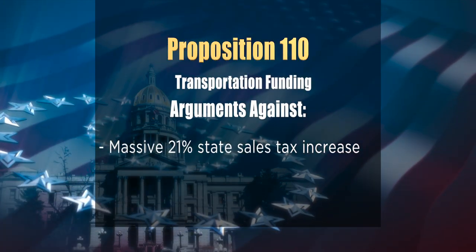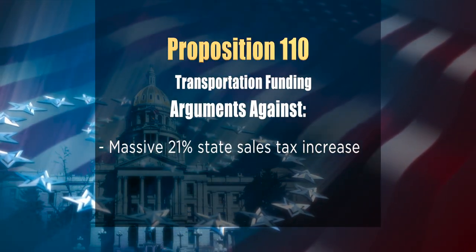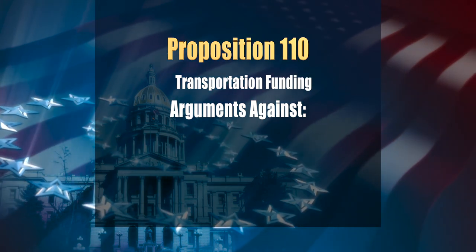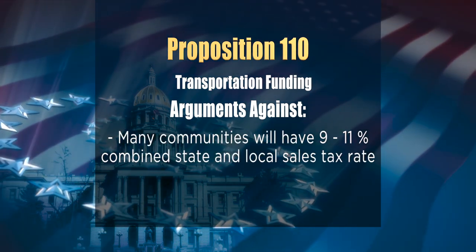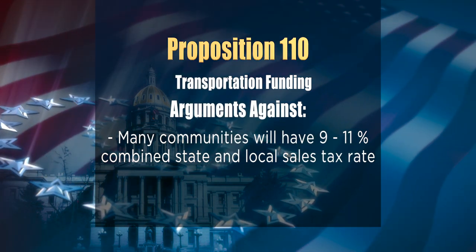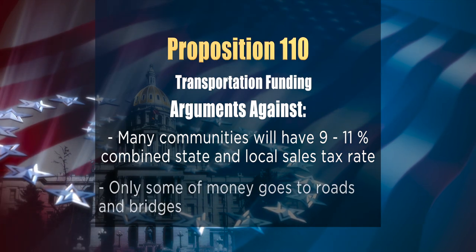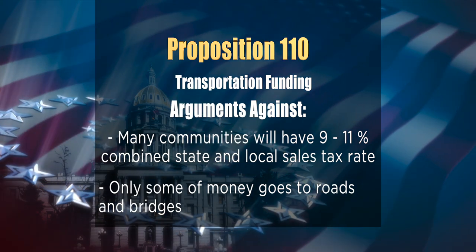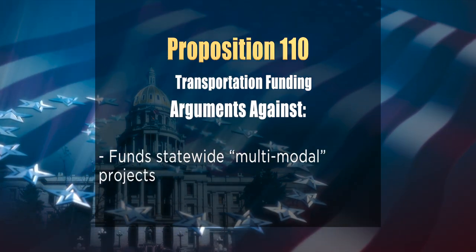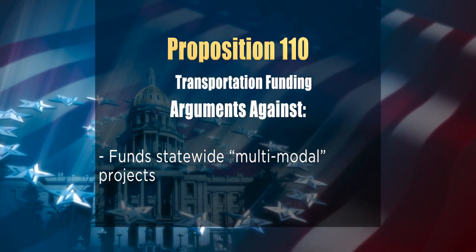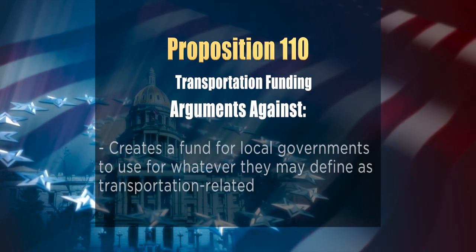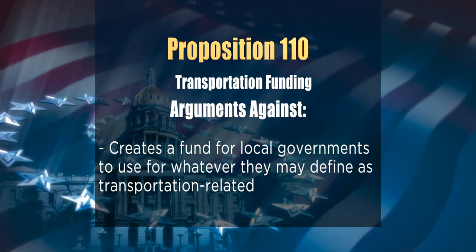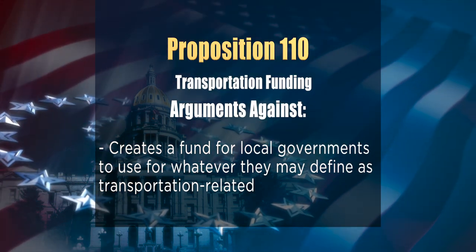Those who oppose Proposition 110 say it is a massive 21% state sales tax increase, and sales taxes are regressive — hitting poor and low-income Coloradans the hardest. Many communities would have combined state and local sales tax rates over 9%, and some over 11%. Opponents also argue that only some of the money goes to roads and bridges, with the rest funding multimodal projects and a local government fund for whatever they may define as transportation-related, making Coloradans in other parts of the state pay for local pet projects.